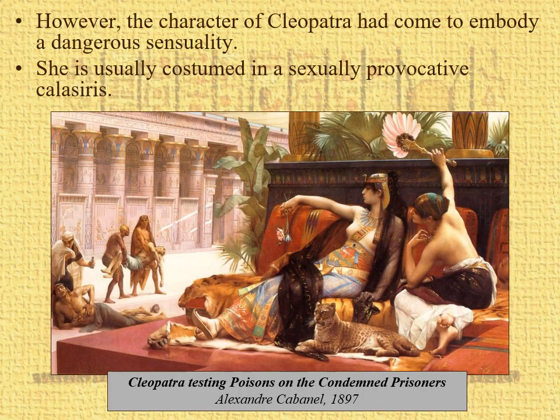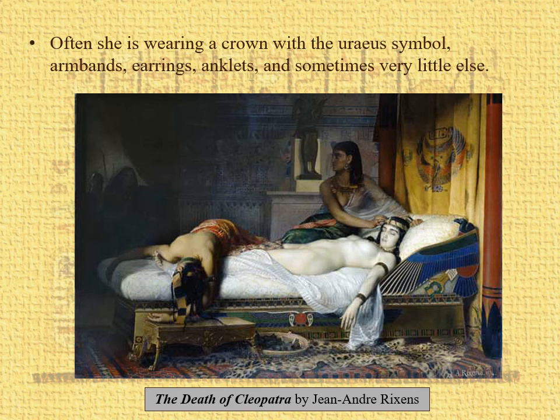Mostly today, particularly starting in the 19th century, she's portrayed very sensuously, very sexually provocative — like in this calisiris here, she's got a leopard at her feet and her lady-in-waiting has pulled her calisiris all the way down. All that color and everything. Here's another — the death of Cleopatra. Why is this in a costume class? She's not wearing anything, but she's got the Uraeus headdress — again, very characteristic.